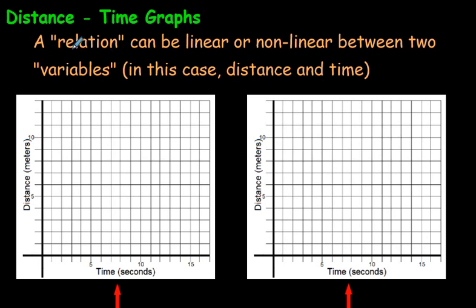So a relation, as it says at the top here, it can be linear, which is a straight line, or it can be non-linear, which is a curved line, between two variables. So the variables are two, it's almost like they're two topics. In this case, distance and time. Distance goes up here on the y-axis and time here is going to go along the x-axis.